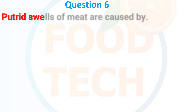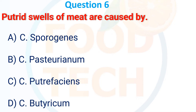Putrid swells of meat are caused by: A, C. sporogenes; B, C. pasteurianum; C, C. putrefaciens; D, C. butyricum. The answer is A, C. sporogenes.